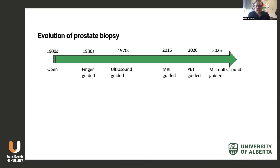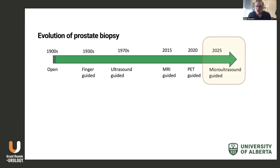Prostate biopsy has really changed over the last 120 years. It started with an open surgical procedure — a transperineal procedure — that was fraught with complications like incontinence and erectile dysfunction. Then it evolved into a finger-guided biopsy, then about 50 years ago a transrectal ultrasound-guided biopsy, and then MRI guidance over the last 10 to 15 years. Now PET guidance, and potentially in the future, micro-ultrasound guidance.